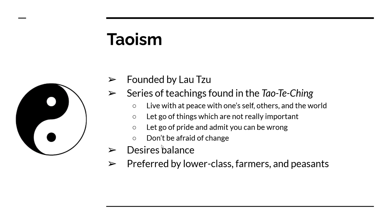Last but not least is Taoism, founded by Lao Tzu around 370–380 BC. Just like Confucianism, it started as a philosophy and became a religion. The teachings of Lao Tzu are all about finding balance in your life, trying to balance with nature, and all of Lao Tzu's teachings are found in the Tao Te Ching.